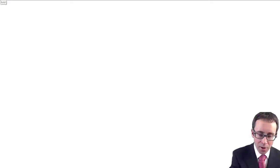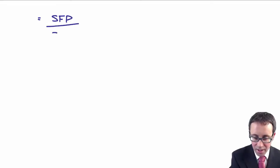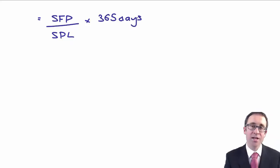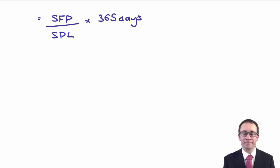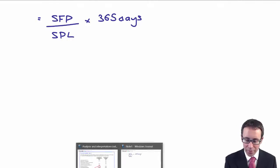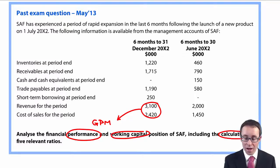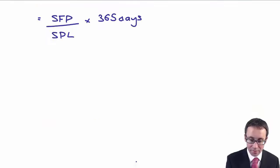When you're thinking about working capital, you take your statement of financial position figure, divide it by your statement of profit or loss, and multiply it by 365 days. So for the inventory, you take your inventory — in this case 1220 — divide that by your cost of sales, and multiply it by 365.